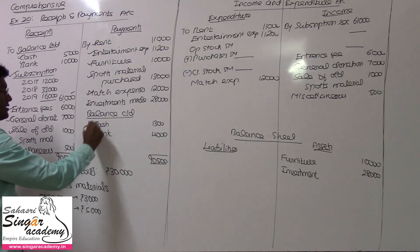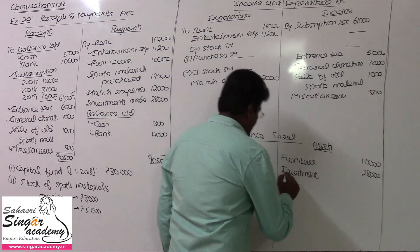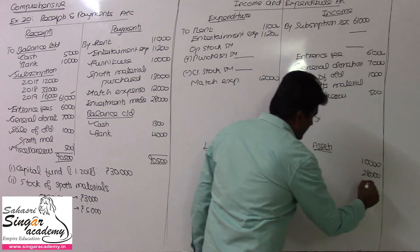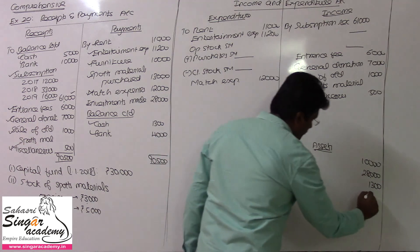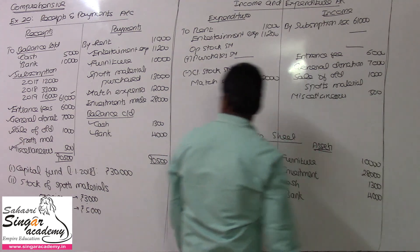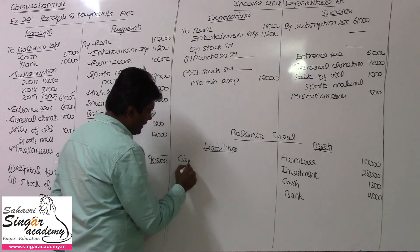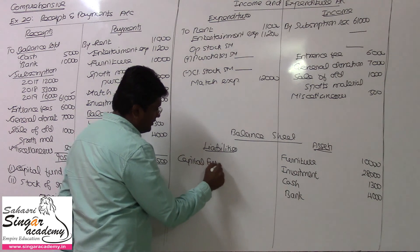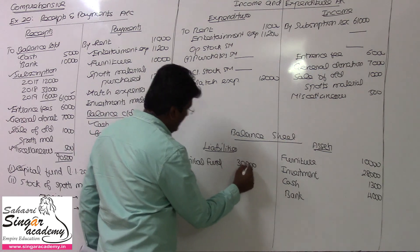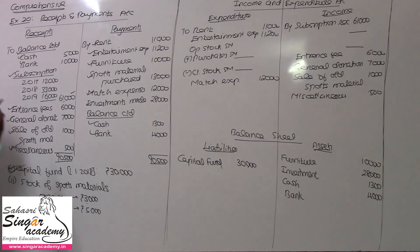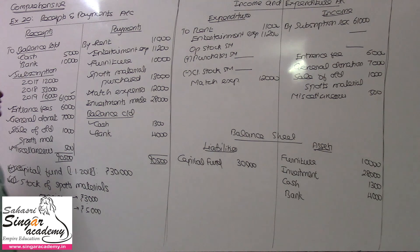Closing balances will come on the asset side. Opening balance sheet — this is the balance sheet of the previous year. Cash balance, value being 1,300. Bank being 4,000. Capital fund opening value: 30,000 rupees. Stock of sports material opening: 3,000.